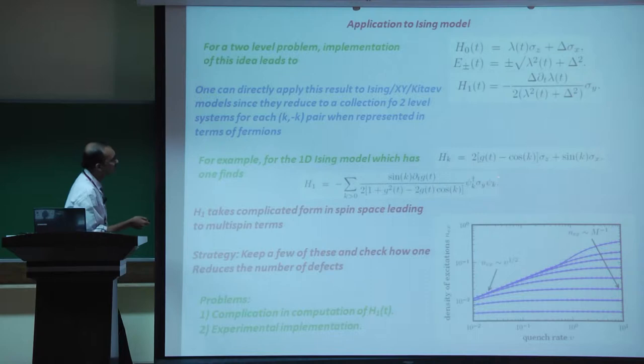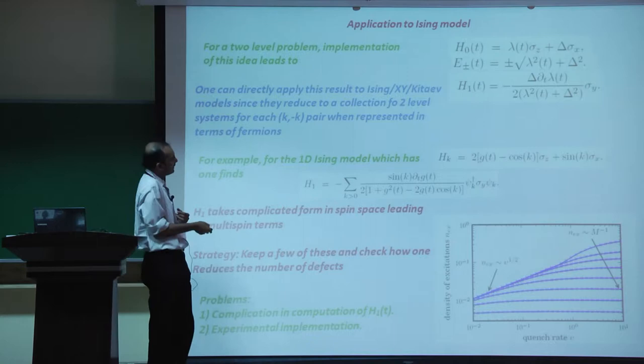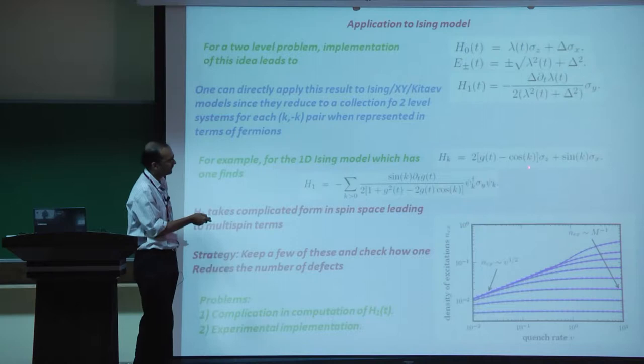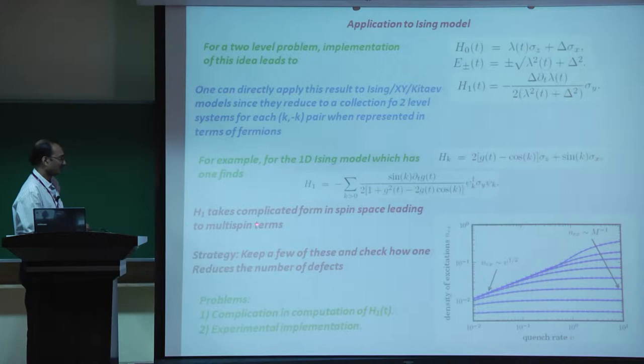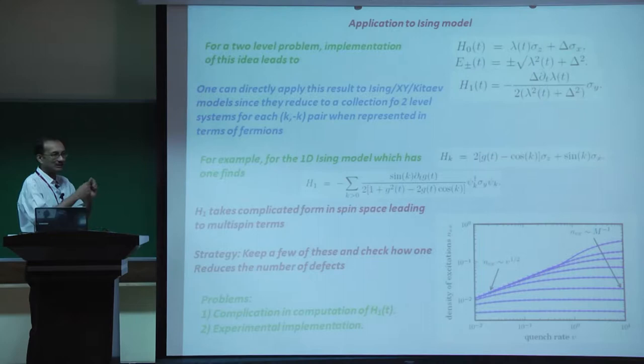The 1D Ising model in this representation can be written in a specific form with an exact expression. Although this H_1 has a reasonably simple expression in terms of the fermionic representation of Ising spins, it takes a very complicated form in spin space, leading to multiple terms. From an experimental viewpoint, when given an Ising model, you need to design terms containing multiple spin correlations.